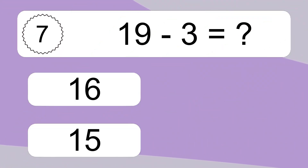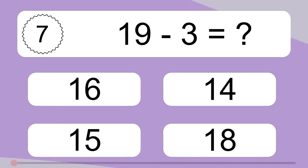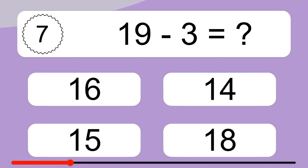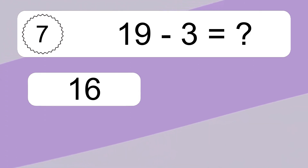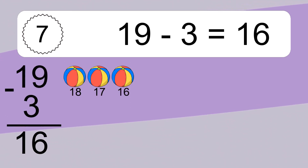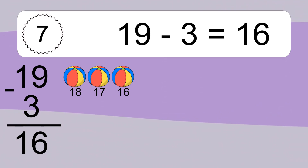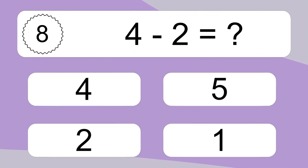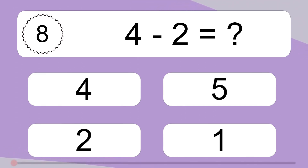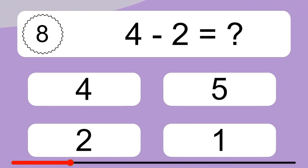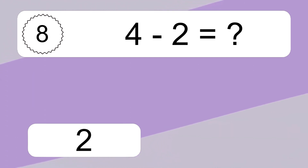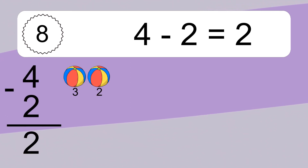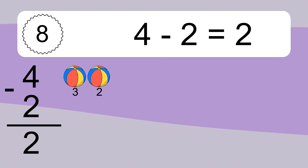19 minus 3 equals what? 19 minus 3 equals 16. Let's count it: 18, 17, 16. 4 minus 2 equals what? 4 minus 2 equals 2. Let's count it: 3, 2.